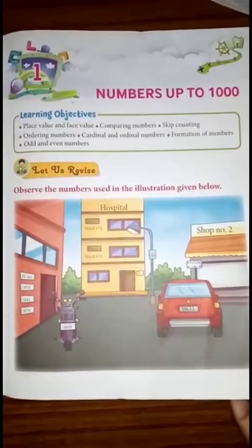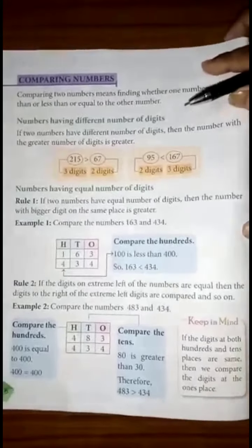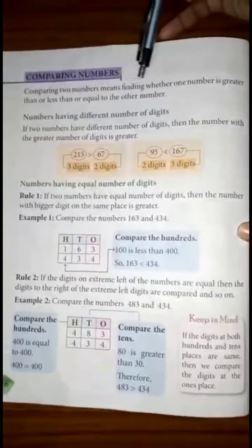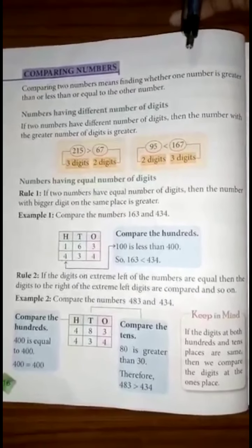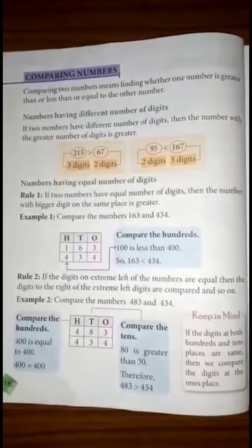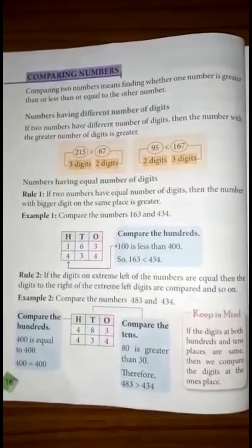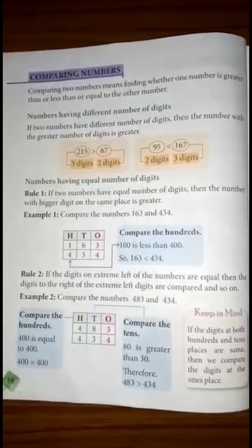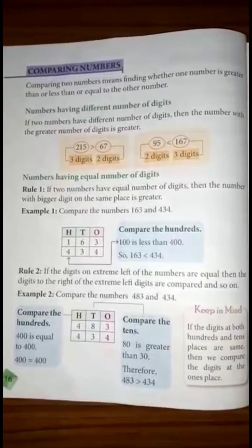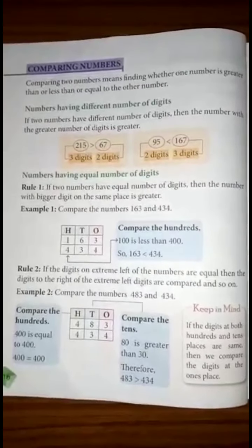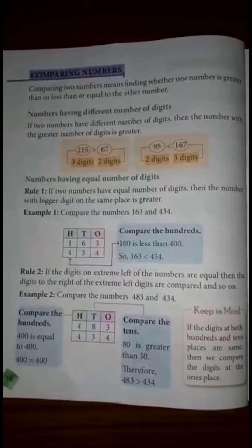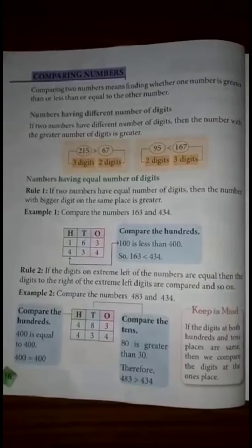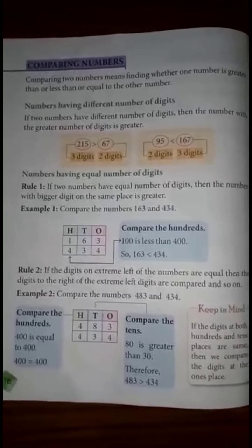Now we will describe comparing numbers. Comparing numbers means finding whether one number is greater than, less than, or equal to the other number. We will compare one number to the other number to check whether the first or the other number is greater, less, or equal.